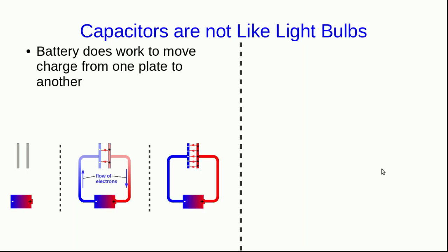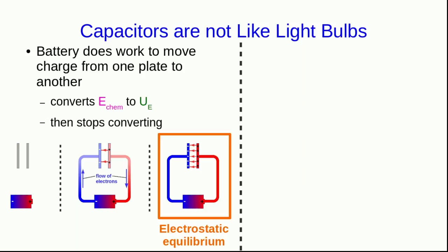I'm going to start with the rather painfully obvious statement that capacitors are not like light bulbs, but I mean something specific by that. When you connect a battery up to a capacitor, it does work by moving charge from one plate to the other. And as it does so, it's converting chemical energy in the battery into electric potential energy, which is stored in the capacitor. But that process doesn't go on for very long. The whole system ends up in electrostatic equilibrium rather quickly, at which point no charge is being moved around anymore, and so the battery stops converting chemical energy into electric potential energy.